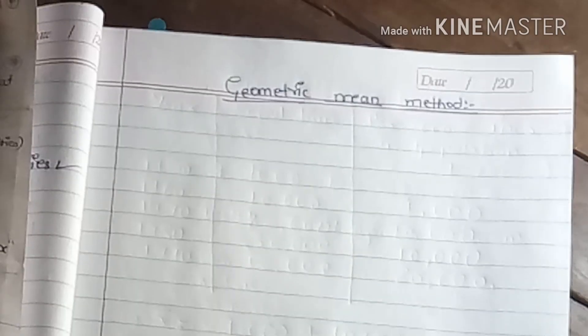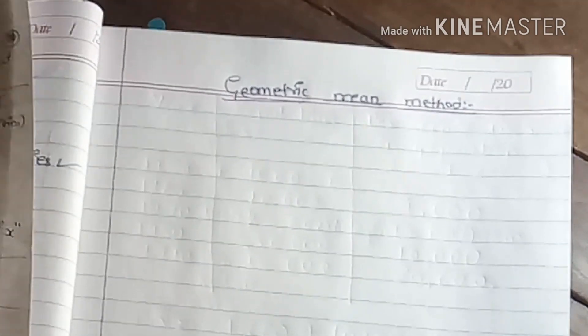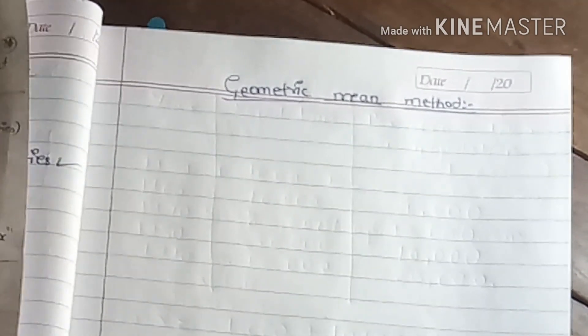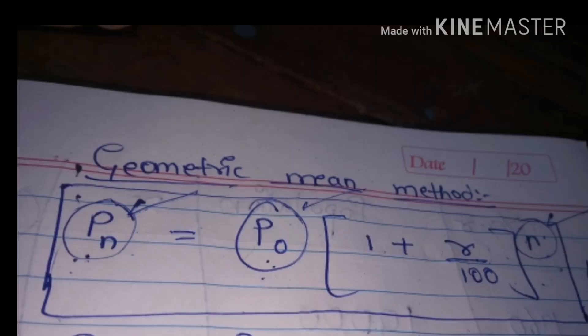Hello friends, today we will be discussing the geometric mean method of population forecasting. It is also called the geometric increase method. Without wasting time, let us look at the formula. The formula is: Pn = P0 × (1 + r/100)^n.